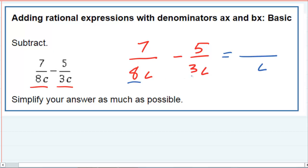But the numbers, the 8 and the 3, for those we have to get a common denominator. And we do that the same way we would if it was an ordinary fraction. We would find the lowest common multiple between 3 and 8 and use that as our common denominator. And between 3 and 8, that would be 24. So my common denominator is going to be 24c.